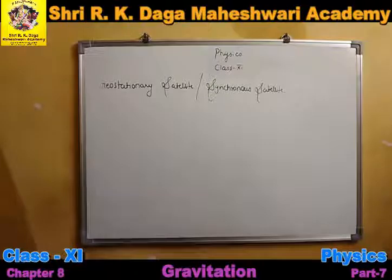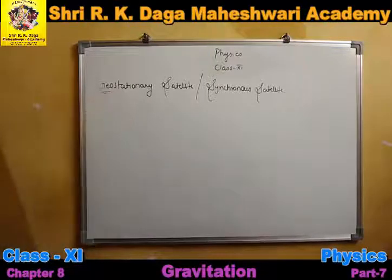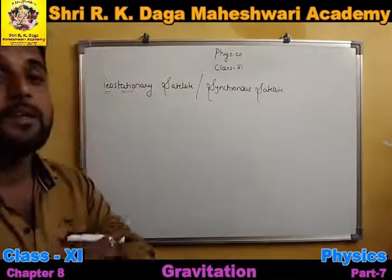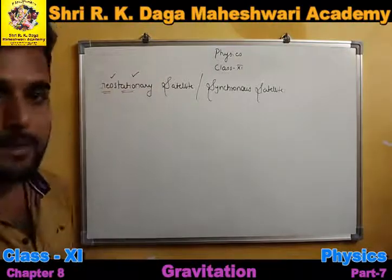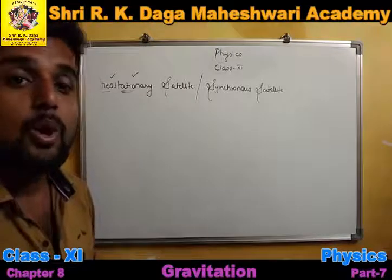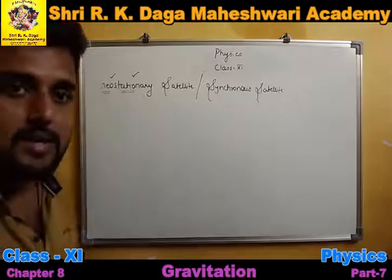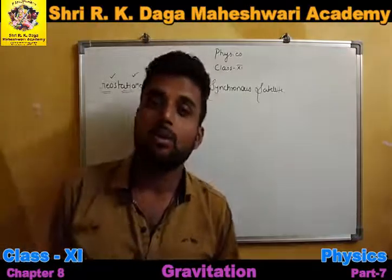From the word 'synchronous' we understand something which is in sync with something else. From 'geostationary' — 'geo' means earth, and 'stationary' means at rest. So a geostationary satellite is one which appears to be at rest with respect to Earth — meaning if I observe it from any point, the satellite appears stationary relative to Earth.